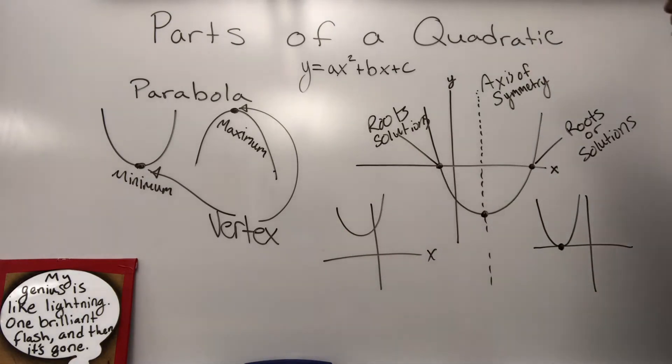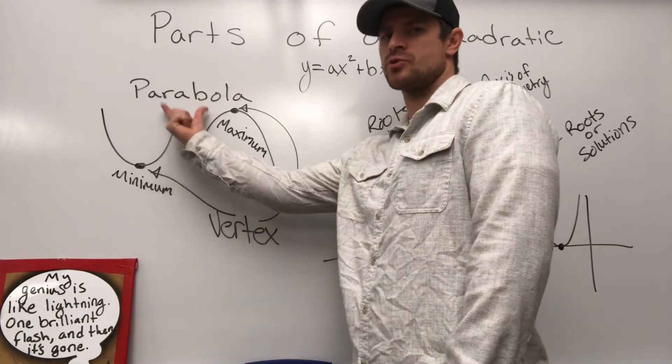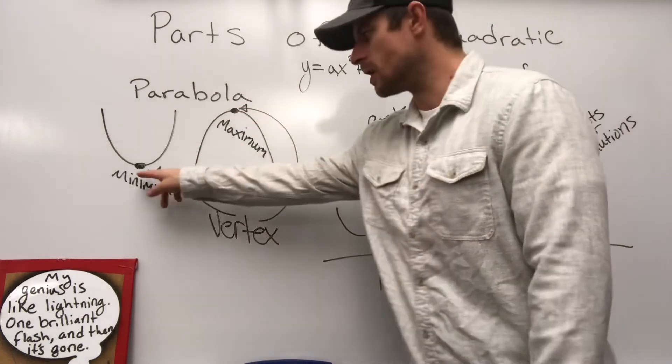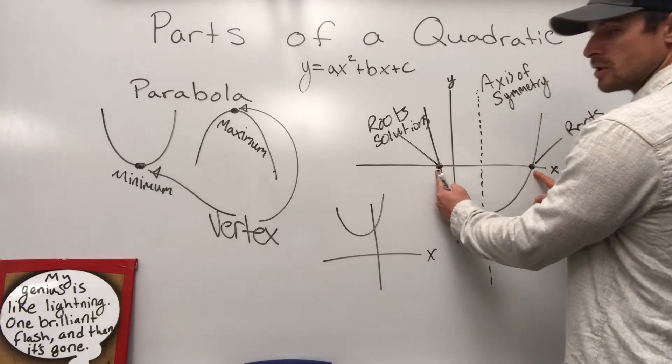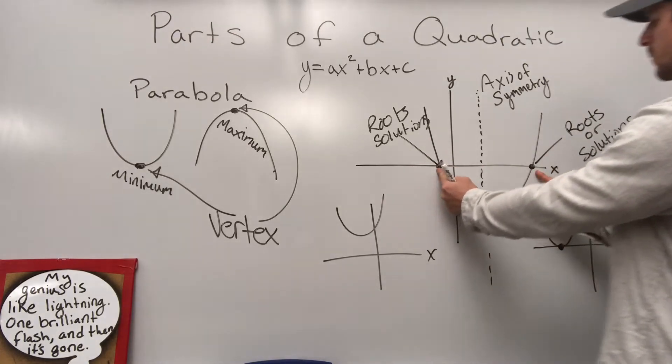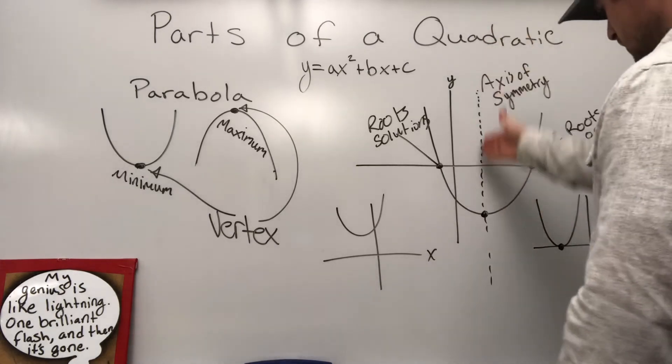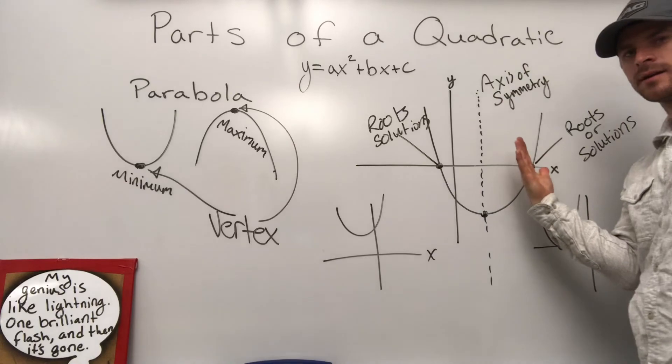So back to it. What are the important terms you need to understand? You need to understand what a parabola is. So you shape figure that is created from a quadratic. You need to know that the vertex is the high or the low point. You need to know that the two points that hit the x-axis are solutions or are roots. Those are what we're going to be finding in this unit. And then the axis of symmetry would be the line that separates the left and the right side of the parabola.